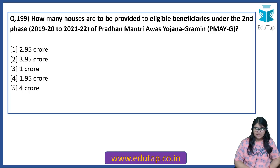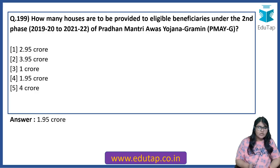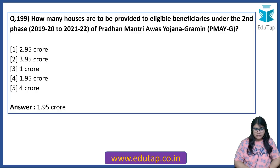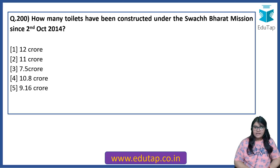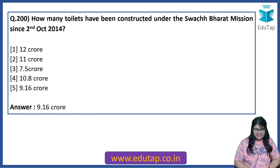How many houses are to be provided to eligible beneficiaries under the second phase (2019-20 to 2021-22) of Pradhan Mantri Awas Yojana Gramin? How many toilets have been constructed under the Swachh Bharat Mission since 2nd October 2014? The correct answer is 9.16 crore. Here we complete 100 questions for today. There are so many more to go — let's see how many of you stay till the end.